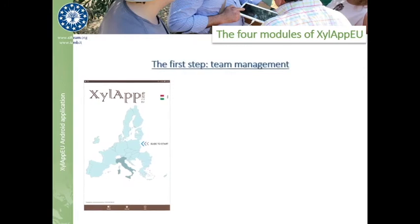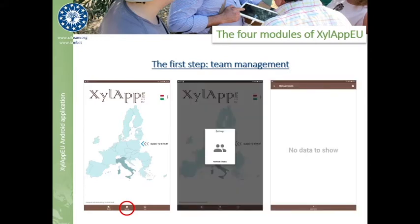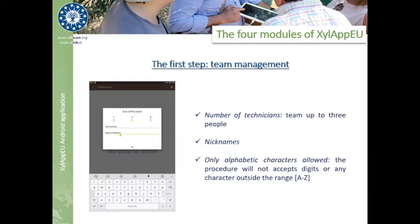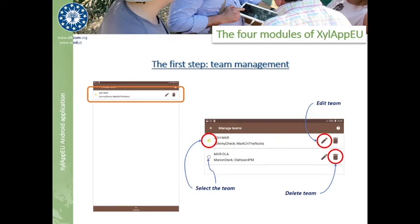Imagine you are with your team of technicians and you need to start sampling. The first step is creating a new team: you'll tap on the settings button below the main screen and select Manage Team. From the screen that appears, you'll tap Add Team to start typing the names of the team components. In our experience, a team of maximum three people is the ideal, so you can select the number of components and for each type in the names or nicknames. It's important to remember that only standard Latin characters are allowed; the application will throw an error if some names contain numbers or other characters. When the team is set, it will appear in the list of teams where you have the possibility to edit, delete, or switch to another team if present.